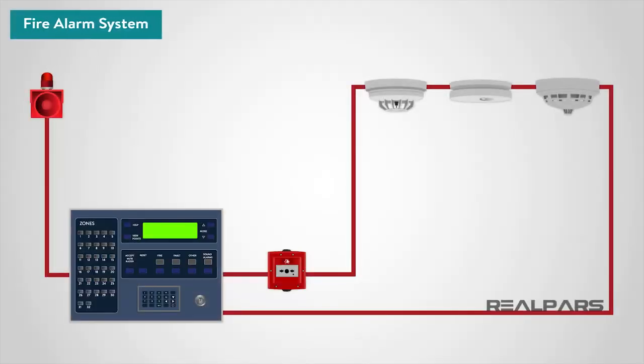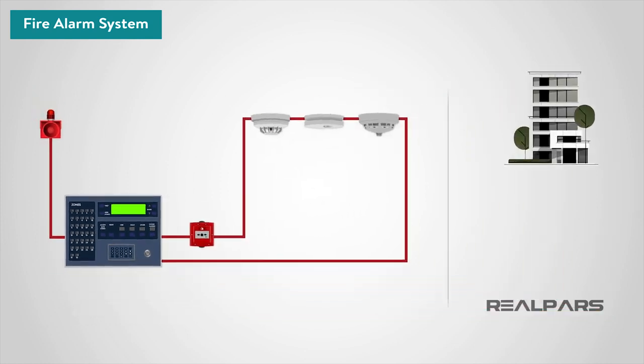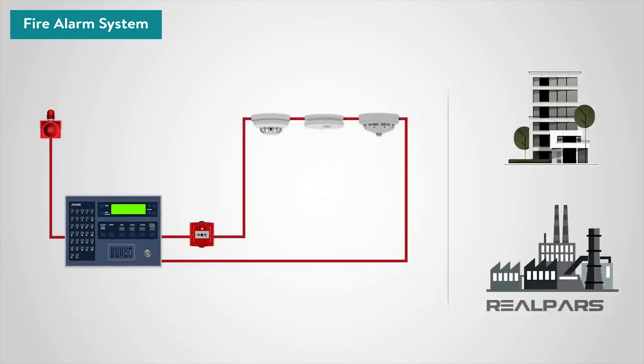Fire alarm systems are designed to alert us to an emergency so that we can take action to protect ourselves, staff, and the general public. Fire alarms are found in offices, factories, and public buildings. They are part of our everyday routine, but are often overlooked until there's an emergency, at which point they might just save our lives.